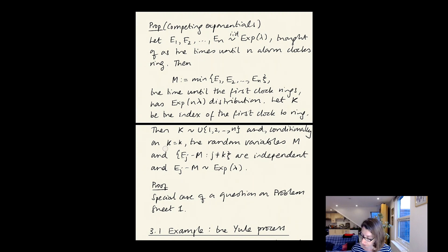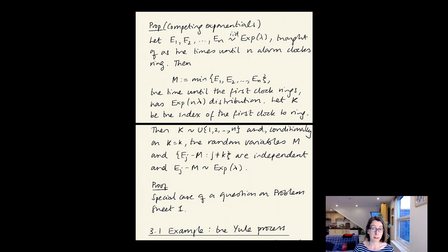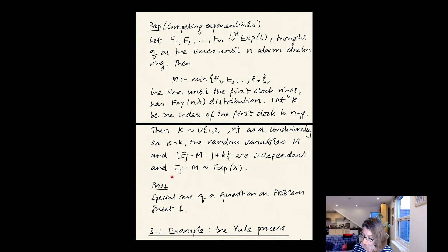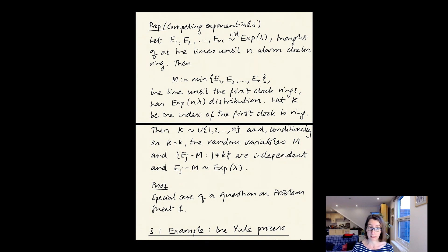Conditionally on it having been alarm clock number k, the random variables m and e_j minus m for the other indices j are independent. This follows from the memoryless property of the exponential distribution. A careful proof is a special case of a question on problem sheet one, so that's left as an exercise. We're going to use this proposition shortly.